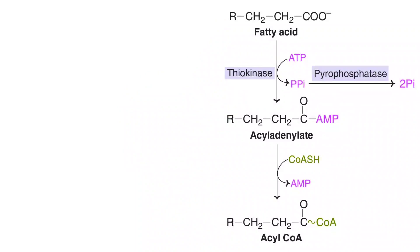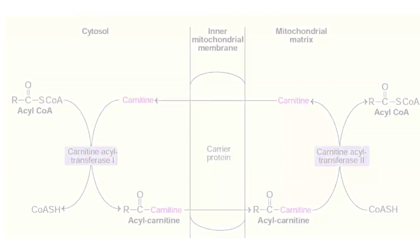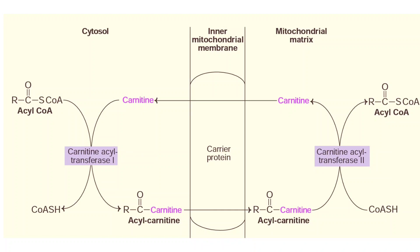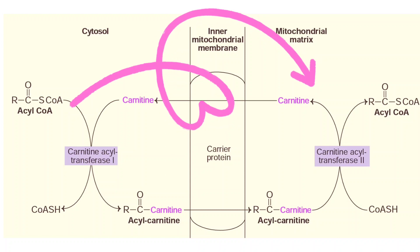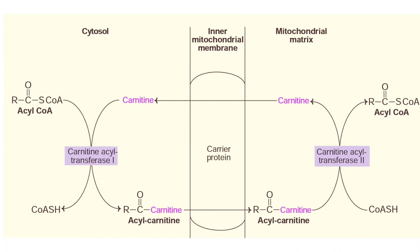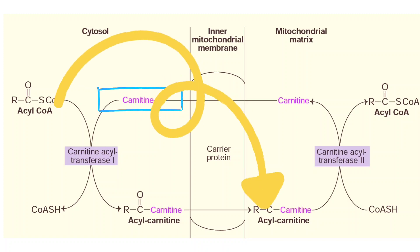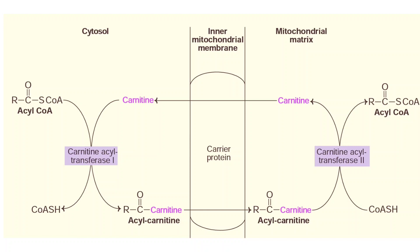This activation step requires energy supplied by ATP, and it actually happens in the cytoplasm. Once the fatty acid is activated, in the next step, this activated fatty acid is transported into the mitochondria. Fatty acyl-CoA, the activated fatty acid, cannot directly enter the mitochondria where the actual beta oxidation takes place. To overcome this, it requires a special carrier molecule called carnitine, which helps transport the activated fatty acid from the cytosol into the mitochondria.